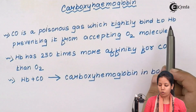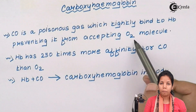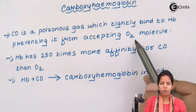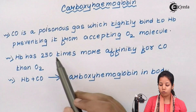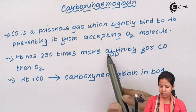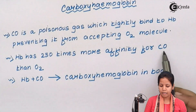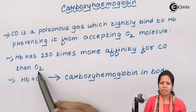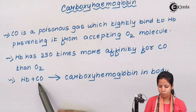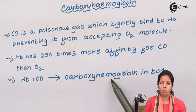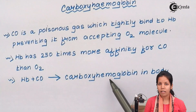In an ideal scenario, your Hb molecule and O2 molecule should bind, but when CO or carbon monoxide is present, Hb and CO form a bond instead. Hemoglobin has 250 times more affinity for carbon monoxide than for oxygen. So if there is a competition between oxygen and carbon monoxide for hemoglobin, hemoglobin would combine with carbon monoxide to form HbCO, or carboxyhemoglobin, which is very deadly for the body.